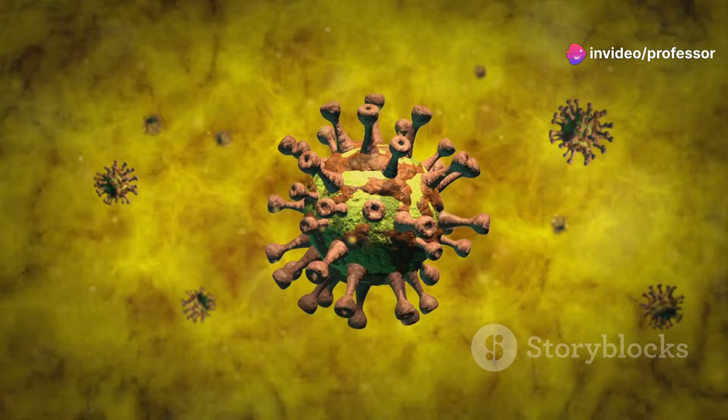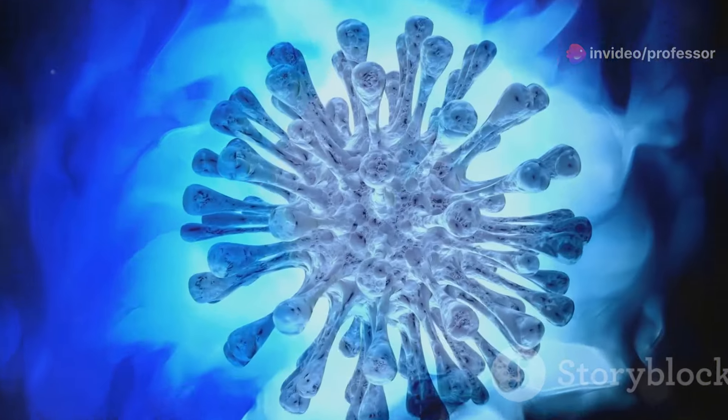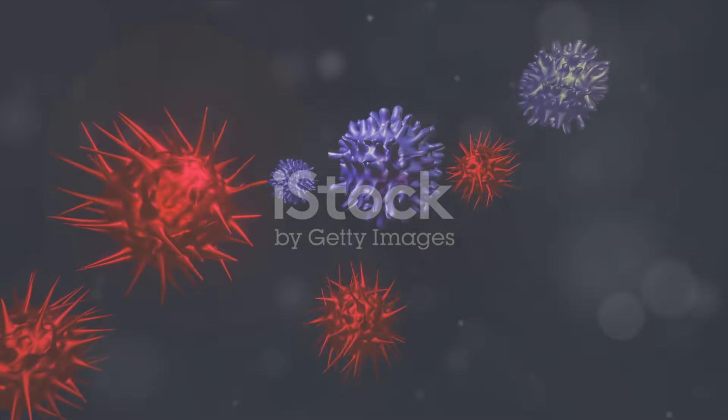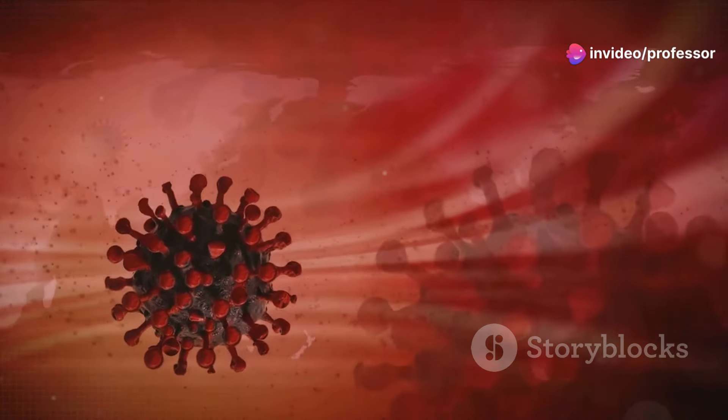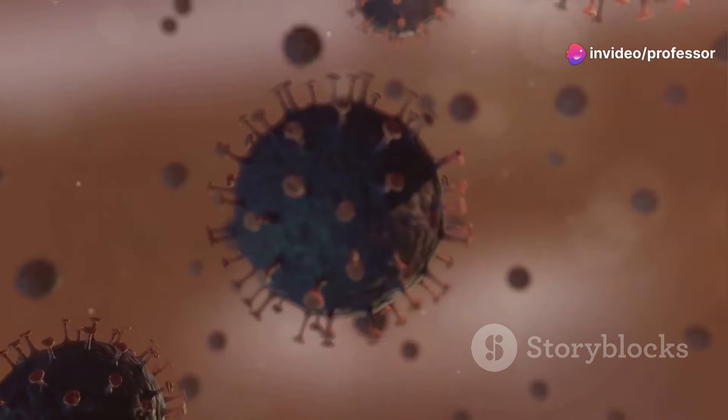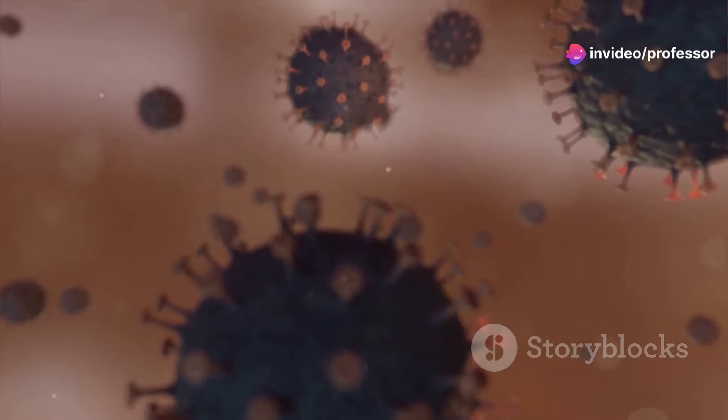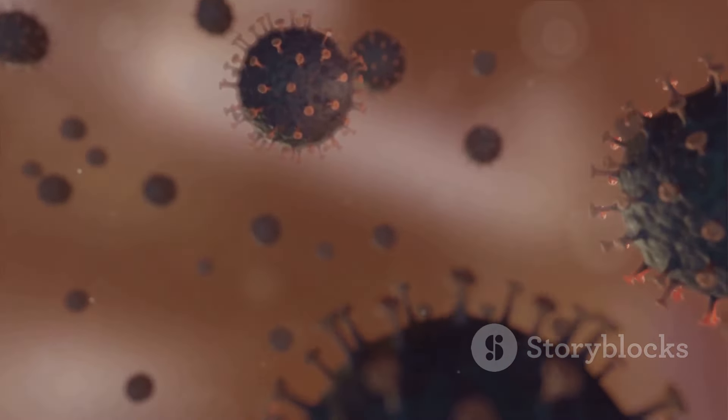Once attached, the virus has a way in, but how does it get inside the cell? With the pathway clear, the coronavirus needs to breach the cell membrane. The virus approaches the host cell like a thief in the night, its spike protein a key designed to unlock entry. It binds to the cell's receptor and begins the merger of its own fatty envelope with the cell's outer layer.